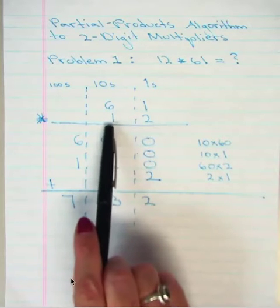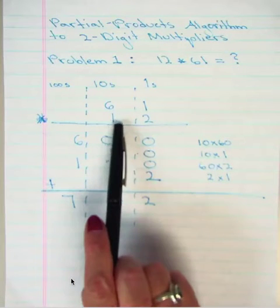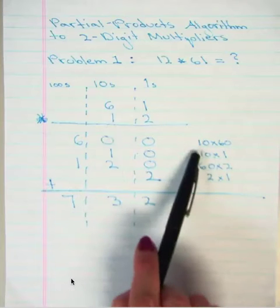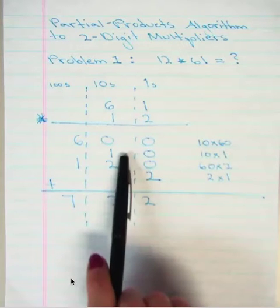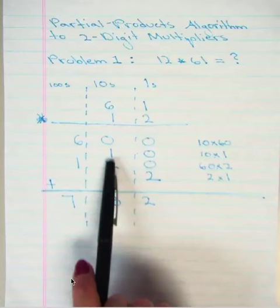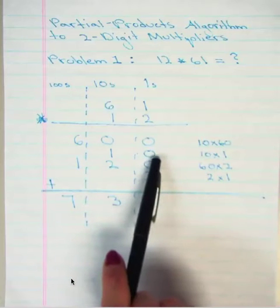When we're done with that, we start on the left once again, and we take the tens place. We say 10 times 1, and that would equal 10, being careful to place the 10 in the right place value once again.